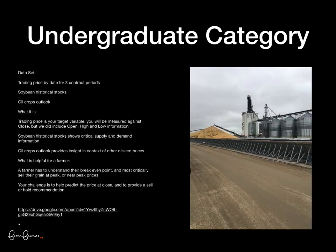In the Undergraduate category, you have access to the same dataset as the Novice category — please use it as you see fit. You also have access to some additional datasets: the trading price by date for the three contract periods, soybean historical stocks, and the oil crops outlook. The trading price is your target variable — you'll be measured against close, but we kept the open, high, and low information in the dataset for you to use. The soybean historical stocks show critical supply and demand information, and it's not just for soybeans. The oil crops outlook provides insight in the context of other oilseed prices. Also, go check out the cover tab — it provides some context as to why the prices are so important this year.